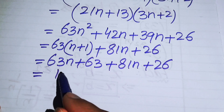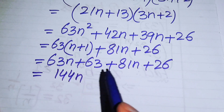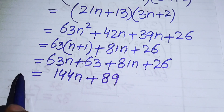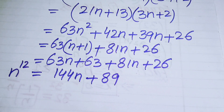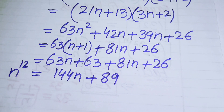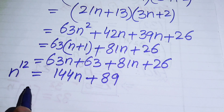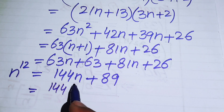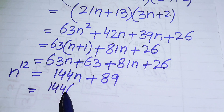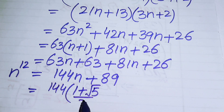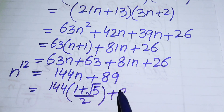Adding like terms: 63n + 81n = 144n and 63 + 26 = 89. So n¹² = 144n + 89. Now we substitute the given value of n, which is the golden ratio: n = (1 + √5) / 2.